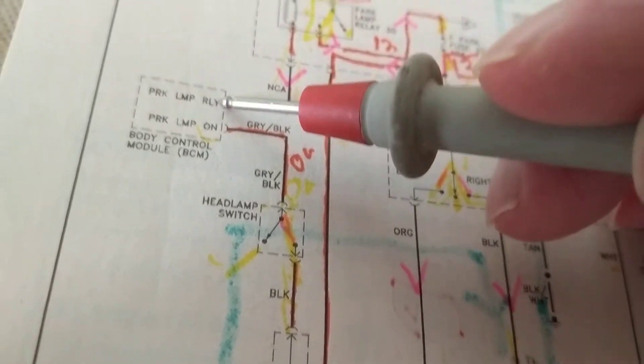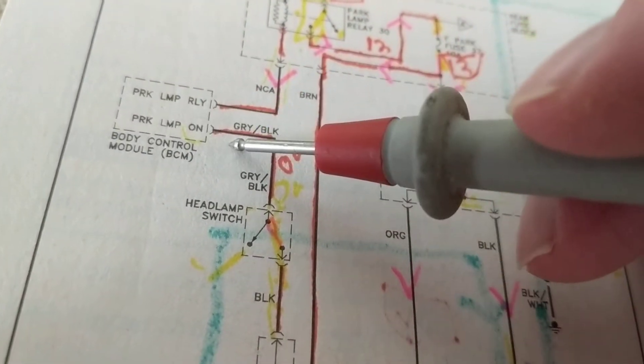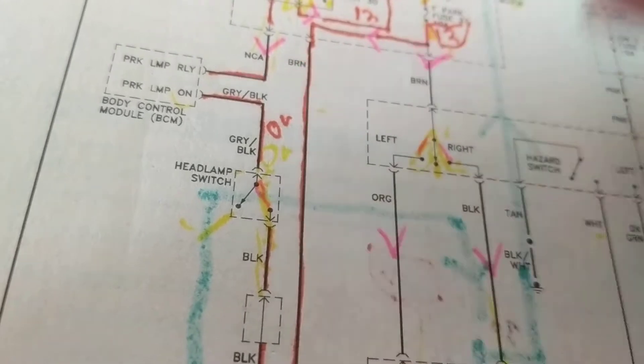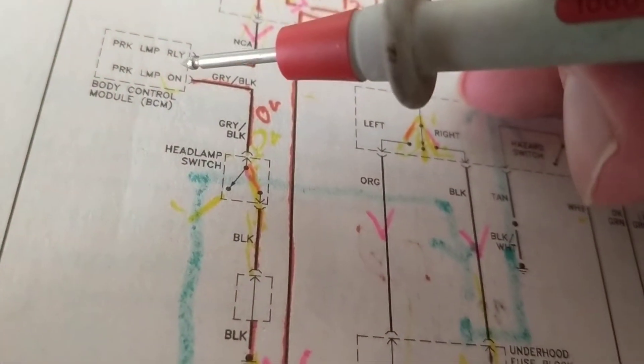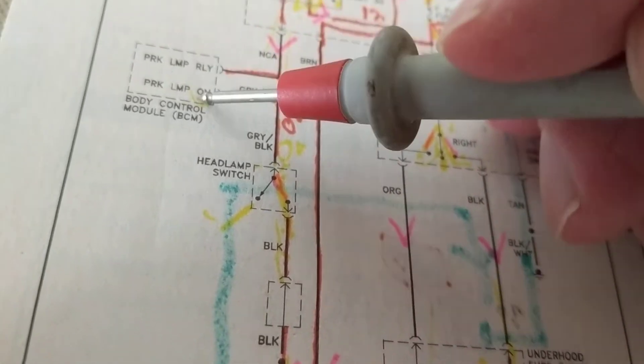From here, 12 volts goes in here and then it comes out here and then 0 volts. So, therefore, again, BCM is in control. He's the boss.